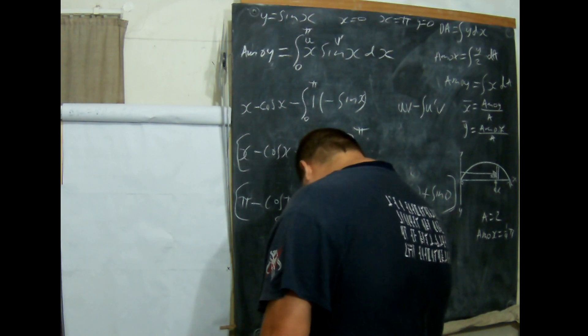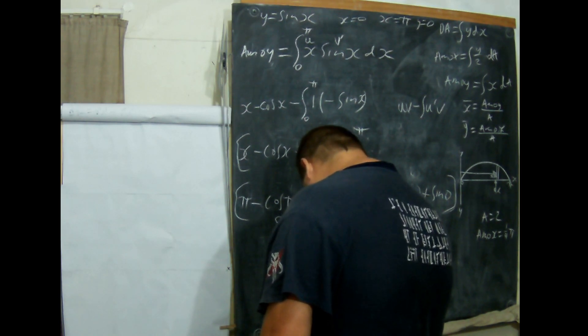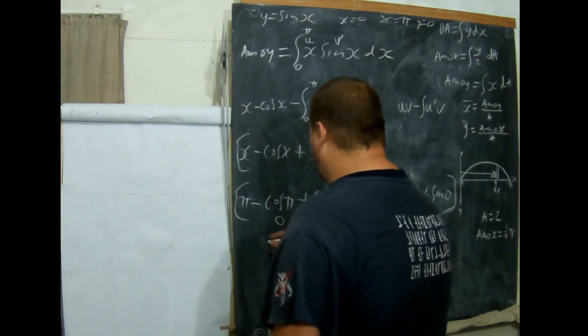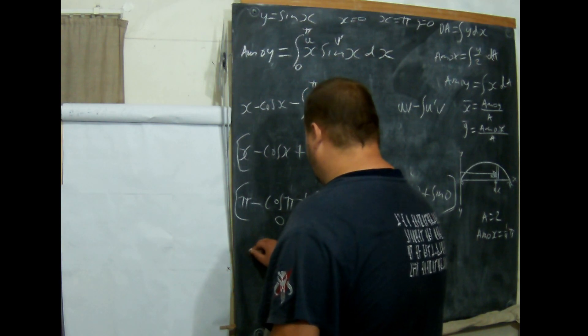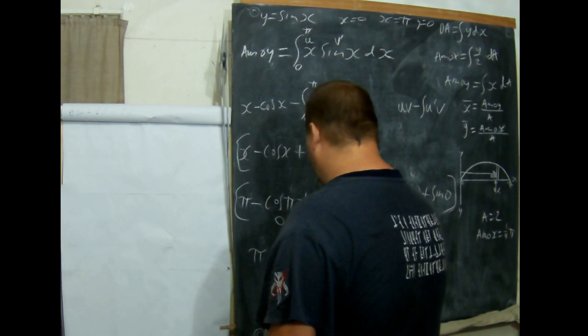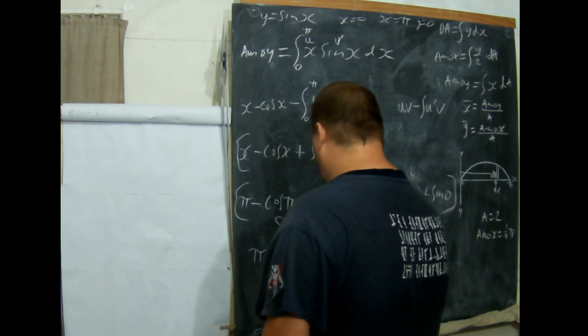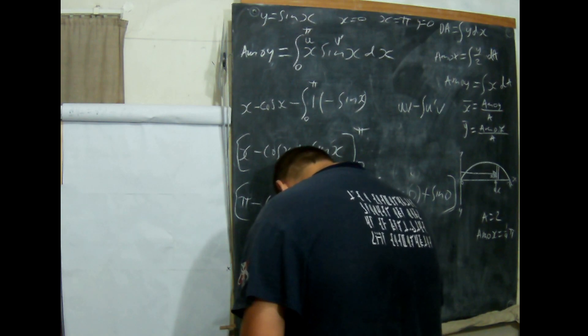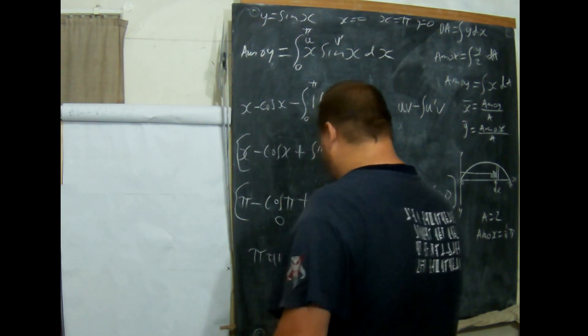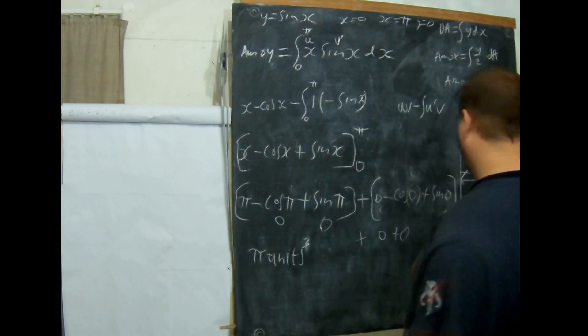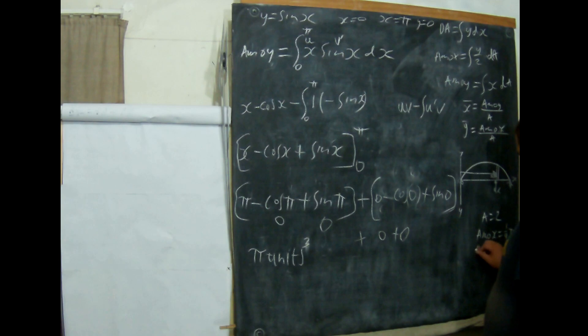What we are left with on all counts is pi. So we are left with pi units cubed. A M O Y equals pi.